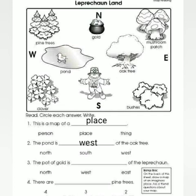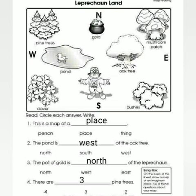Here: the pot of gold is north, west or east of the leprechaun — we can see him at the bottom. It's north — it's at the top of the map and he is at the bottom. Now we're left with an easy one: there are four, three or two pine trees. I'll give you a clue — they're in the left corner. That's right, there are three pine trees. Excellent work, Year 2!